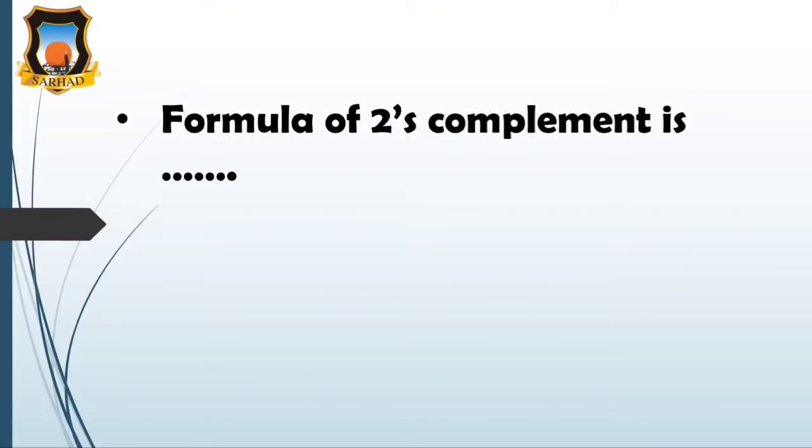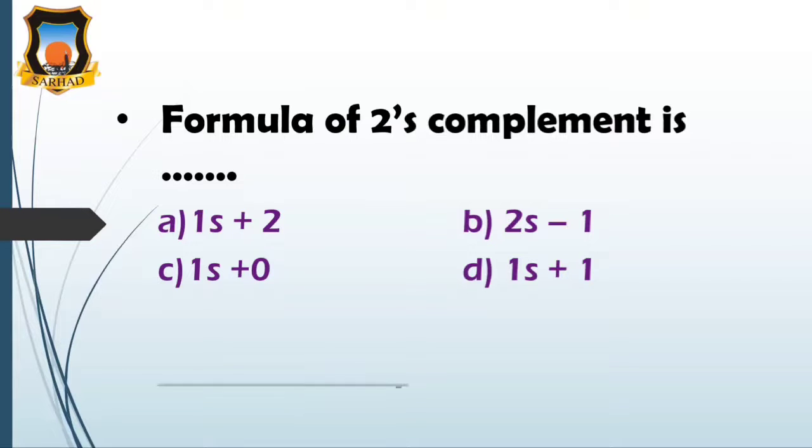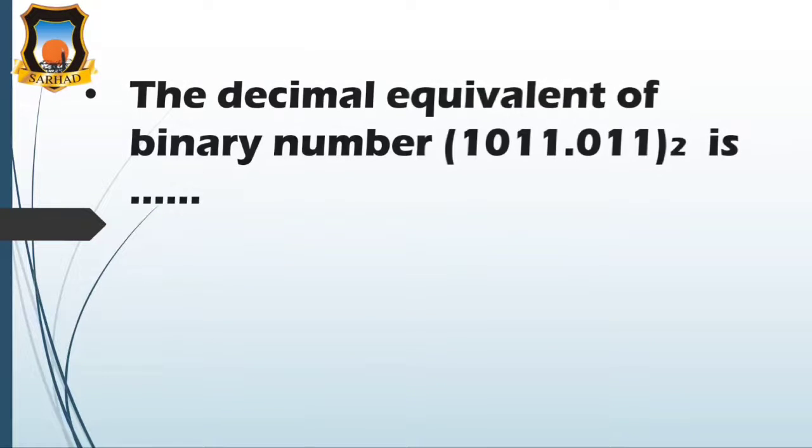Next question: the formula of 2's complement is - option A 1's complement plus 2, option B 2's complement minus 1, option C 1's complement plus 0, and option D 1's complement plus 1. 2's complement is equal to 1's complement plus 1. So the answer is D, 1's complement plus 1.